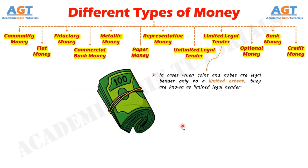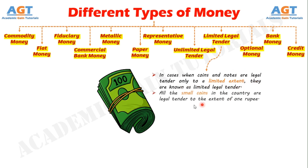Number 9: Limited Legal Tender. In cases when coins and notes are legal tender only to a limited extent, they are known as limited legal tender. All the small coins in the country are legal tender to the extent of 1 rupee.